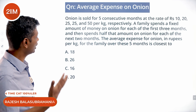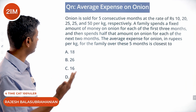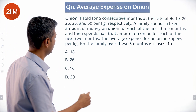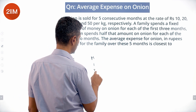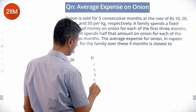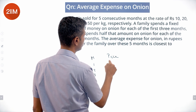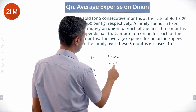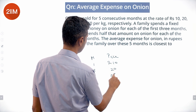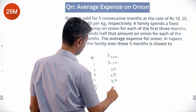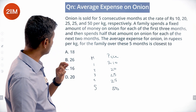Onion is sold for five consecutive months with rates of rupees 10, 20, 25, 25, and 50 respectively. So month 1, 2, 3, 4, 5 — price is rupees 10, 20, 25, 25, and 50.